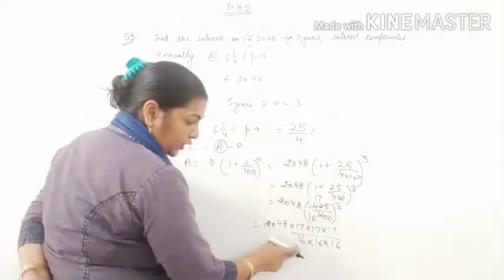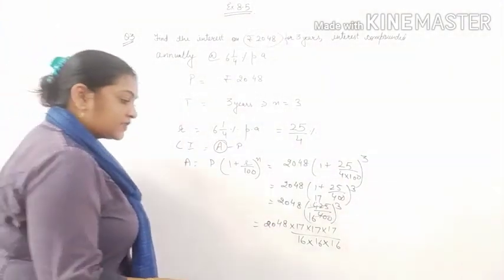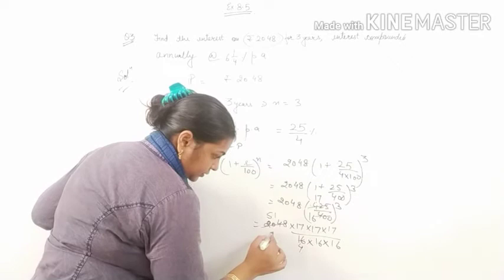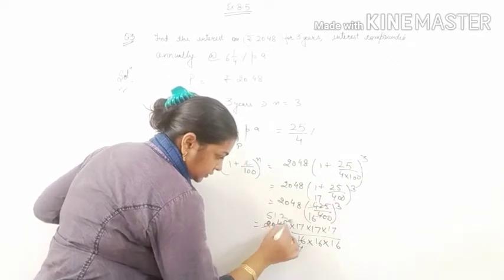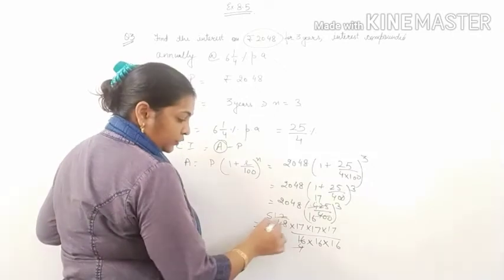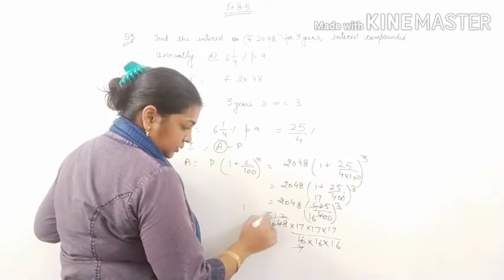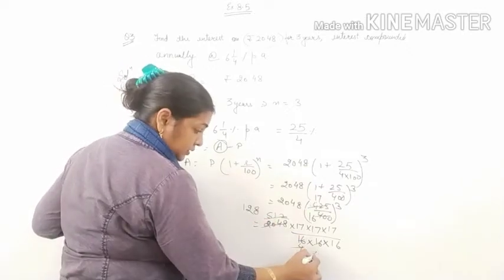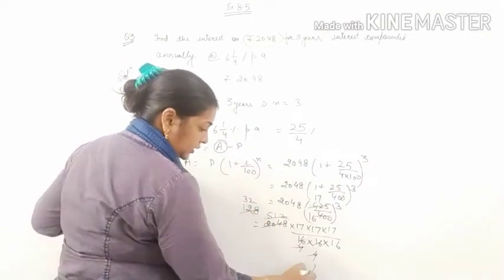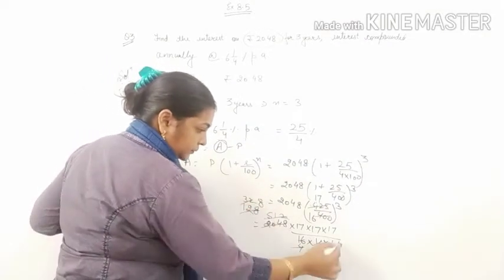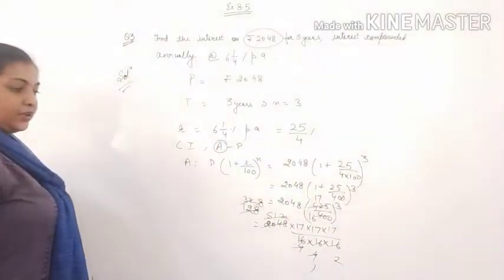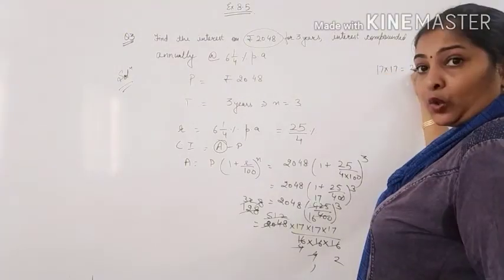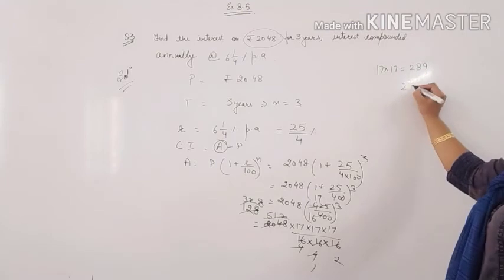Now you will see that 2048 is divisible by 16 as well as 4, so I am doing it by 4. 512, again it is divisible by 4. 128, again divide it by 4. 32, done by 4, it will be 8. This also you can divide, 2 will come in the denominator. Now you know 17 into 17 is 289, now multiply this 289 by 17 once again.